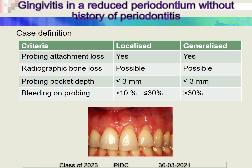Gingivitis in a reduced periodontium without a history of periodontitis covers conditions such as recession occurring because of cervical abrasion, which cannot be directly classified as periodontitis. In these cases, probing attachment loss and radiographic bone loss are present, but probing pocket depth is less than 3 mm. This is the differentiating factor between true periodontitis and this category of false or non-periodontitis-related bone loss.